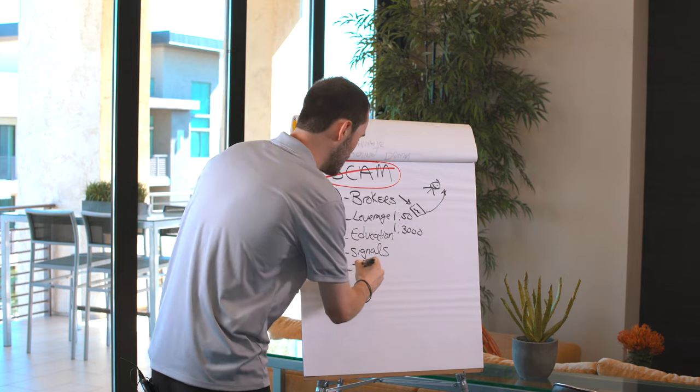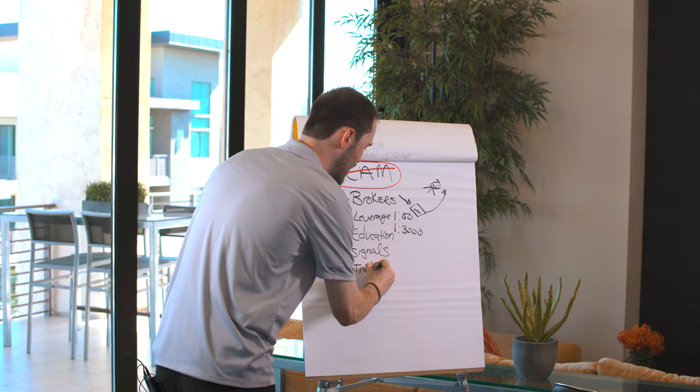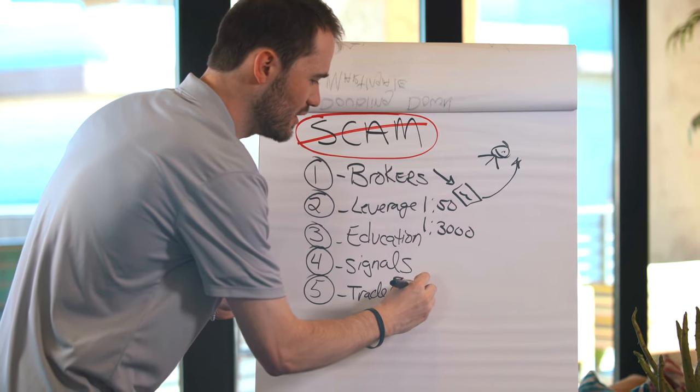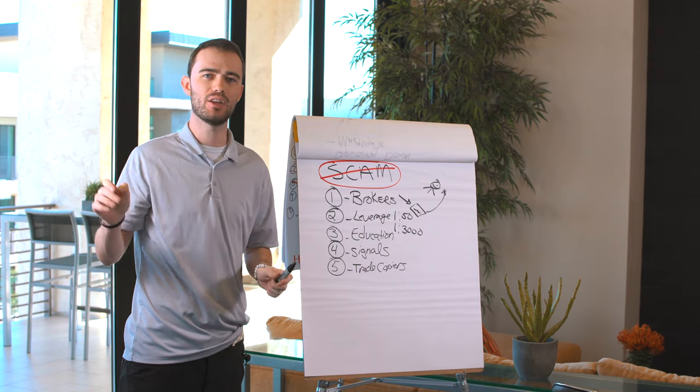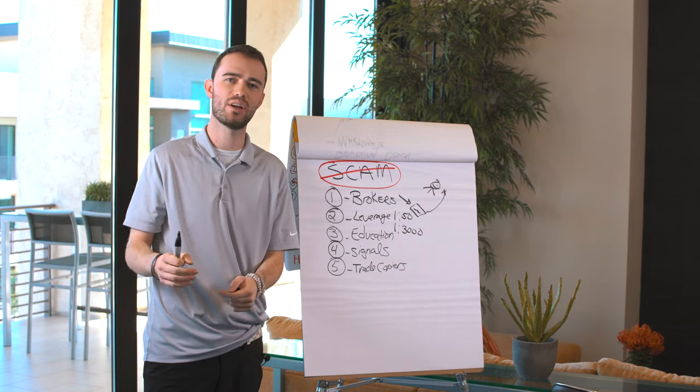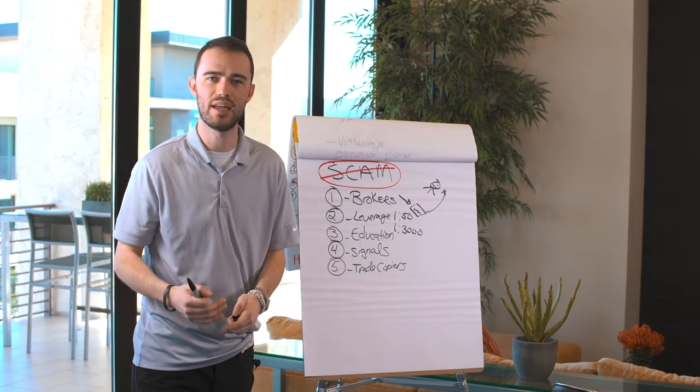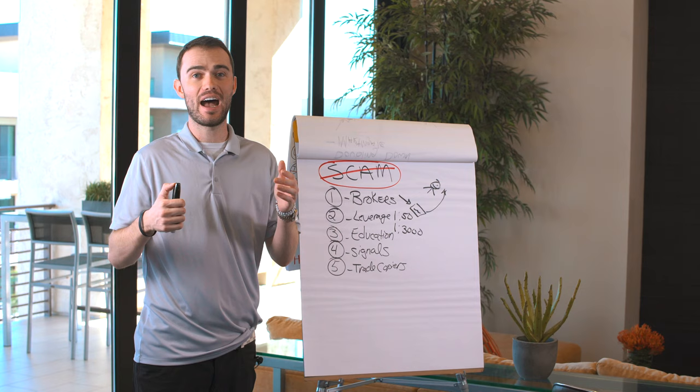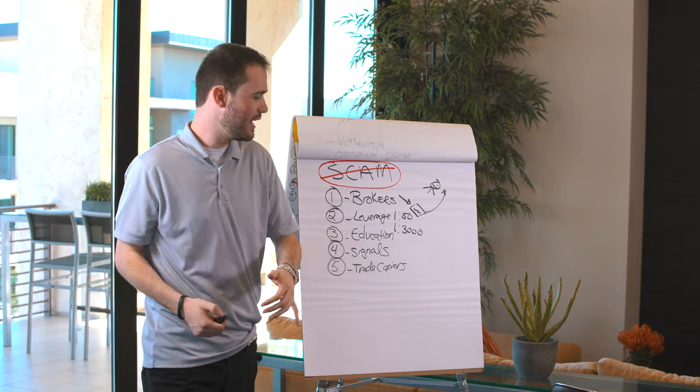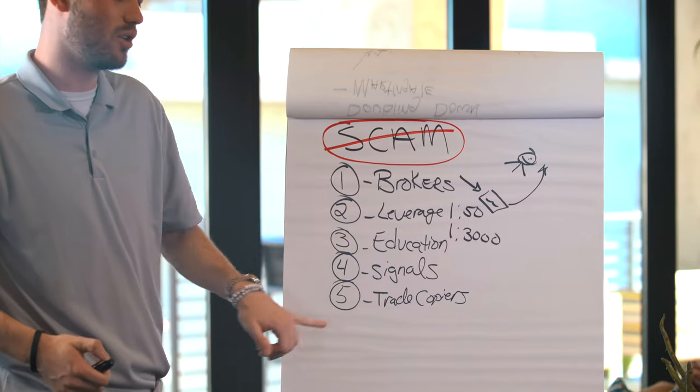The last one is trade copiers. Now, this one I do need, and it is very dangerous. Trade copiers, nine times out of ten, are going to take your money. Keep in mind that most trade copiers are against regulation. They're not actually enabled to do that in most countries. It's usually against regulation for, I would say, 95% of them.